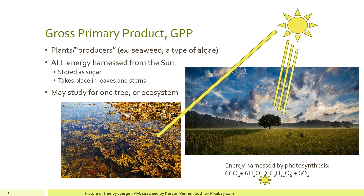We can look at gross primary production for one organism — for example, just studying the gross primary production for a single tree — or we could look at the whole ecosystem: all of everything that lives in the system, the grasses, other trees, animals, and everything living there.